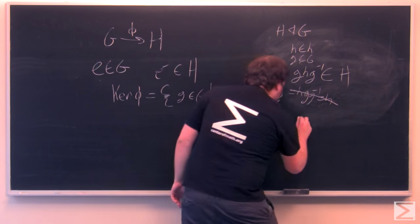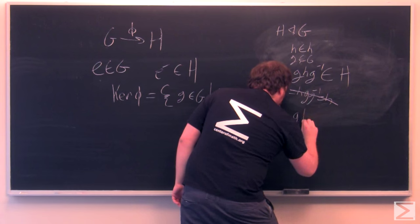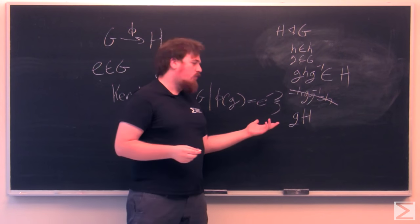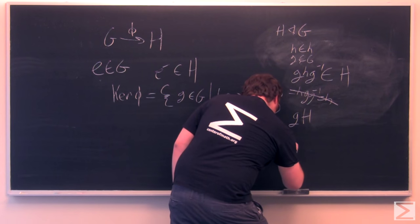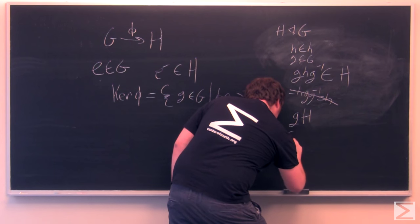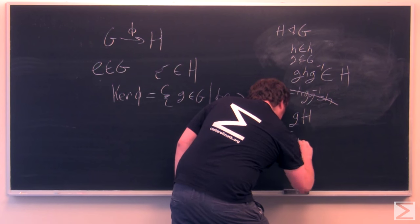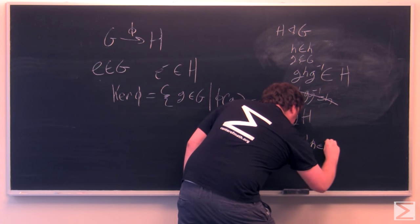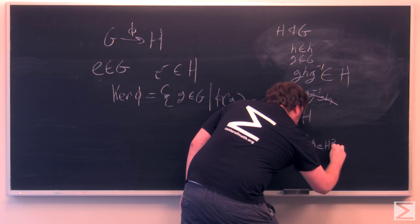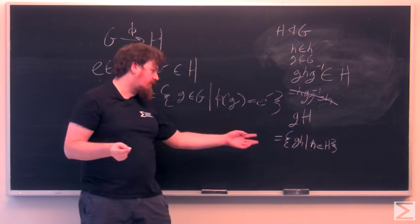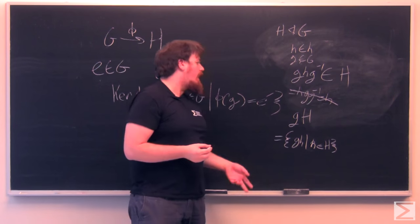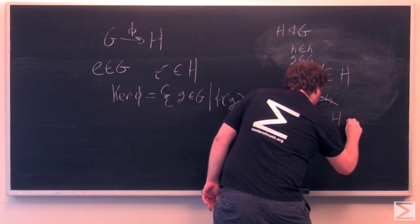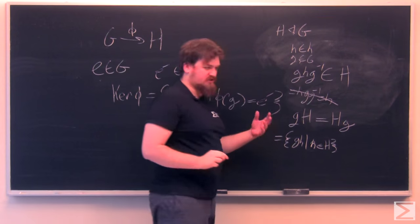What this means is that G commutes with H as a whole. If we write the coset, in this case it's a left coset because G is on the left, which is equal to the set of the products of G on the left with every element in H, this left coset will equal the equivalent right coset.